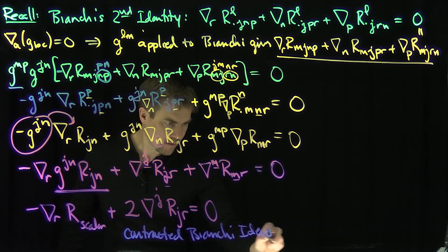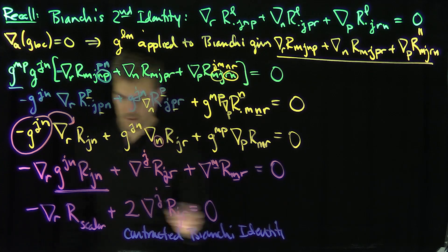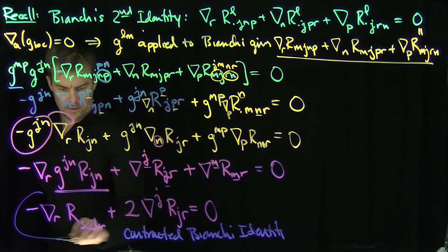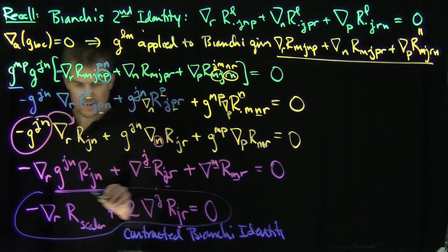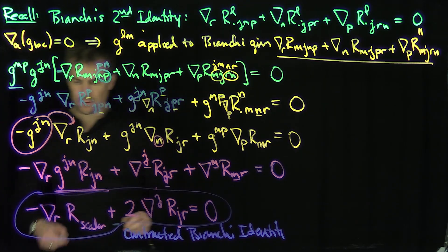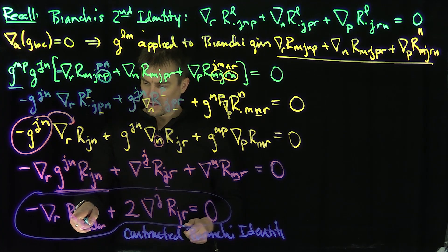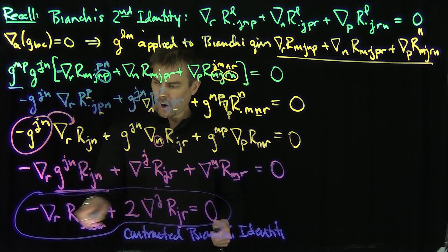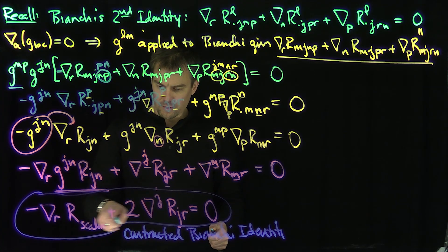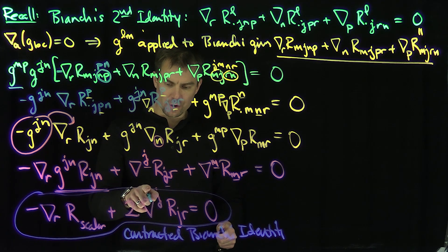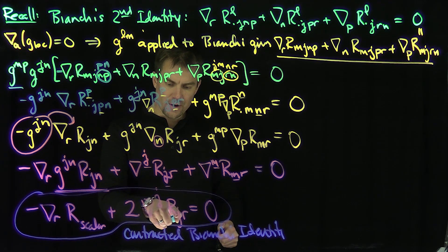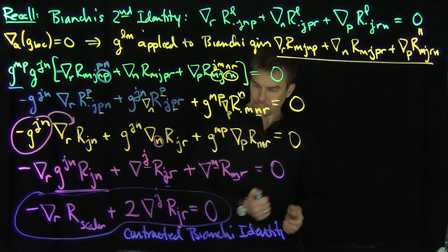The contracted Bianchi identity states that the R-covariant derivative of the scalar curvature R equals twice the contravariant derivative — the traced contravariant J-derivative of Ric_JR. Beautiful.